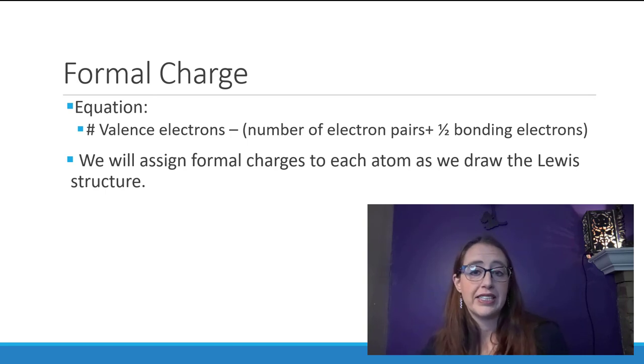Before we get too far into our discussion of Lewis structures, we need to discuss a concept called formal charge. This is the charge that the atom would have if all of the electrons in the bonds were shared equally. It's determined by taking the electrons that the atom owns in the molecule—so their lone pairs and one from each bond—and then subtracting that number from its original valence electrons. The original valence electrons we find from the periodic table.